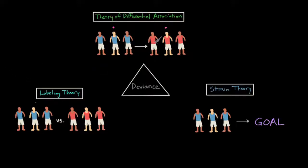Another view of deviance that's supported by the symbolic interactionist perspective of sociology is labeling theory. In labeling theory, a behavior is deviant if people have judged the behavior and labeled it as deviant.